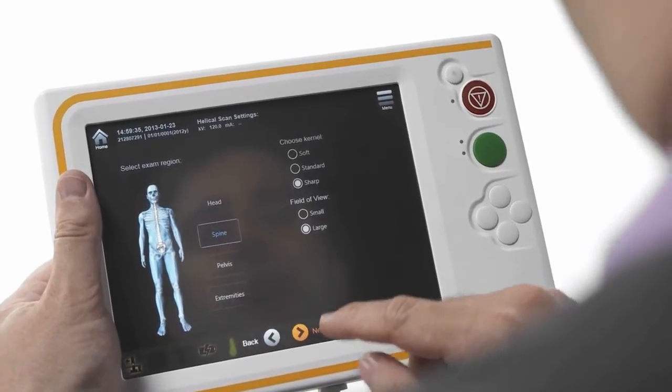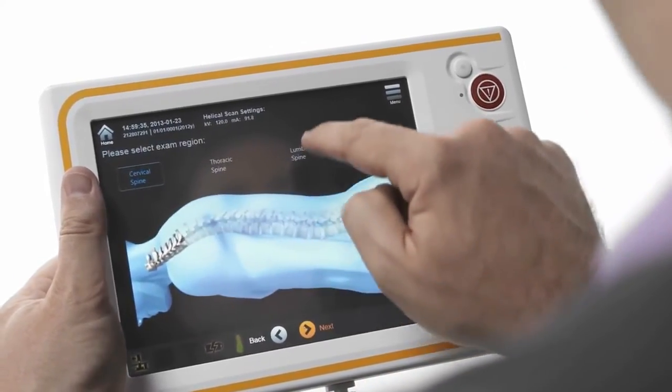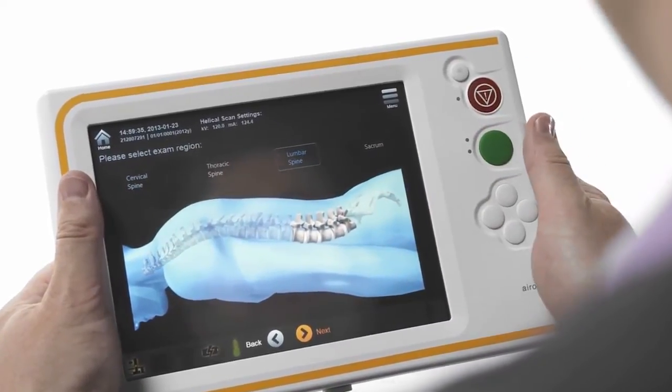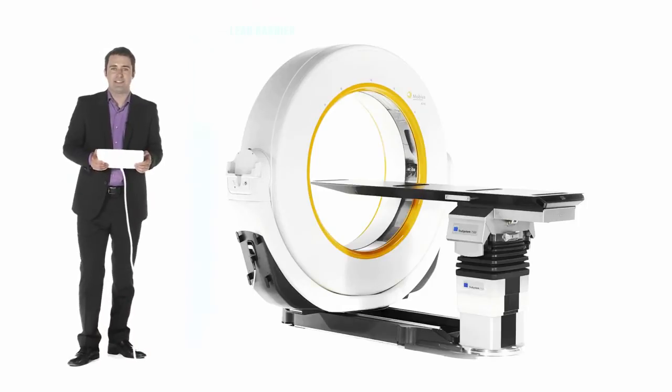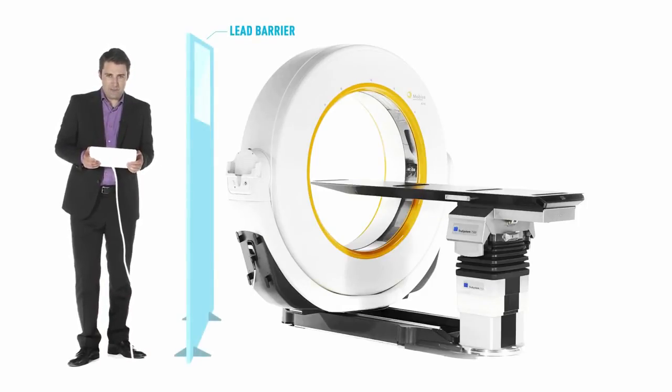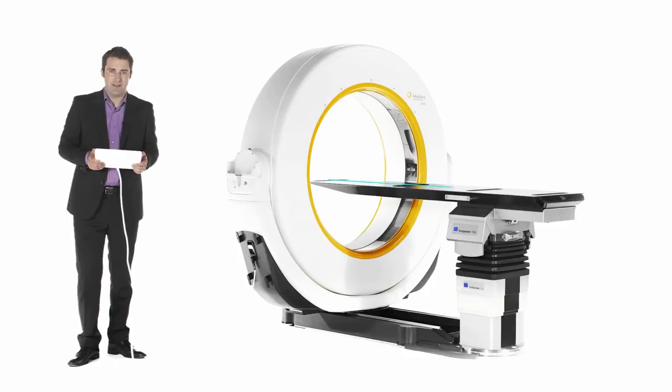After an initial low-dose scout scan, a 3D scan range can be defined. The 32-slice detector array of Aero provides detailed anatomical context for clinical decision-making. Acquired in helical mode with 1mm slice thickness, the scan volume can be set to a maximum of 100cm in length and 50cm in diameter.